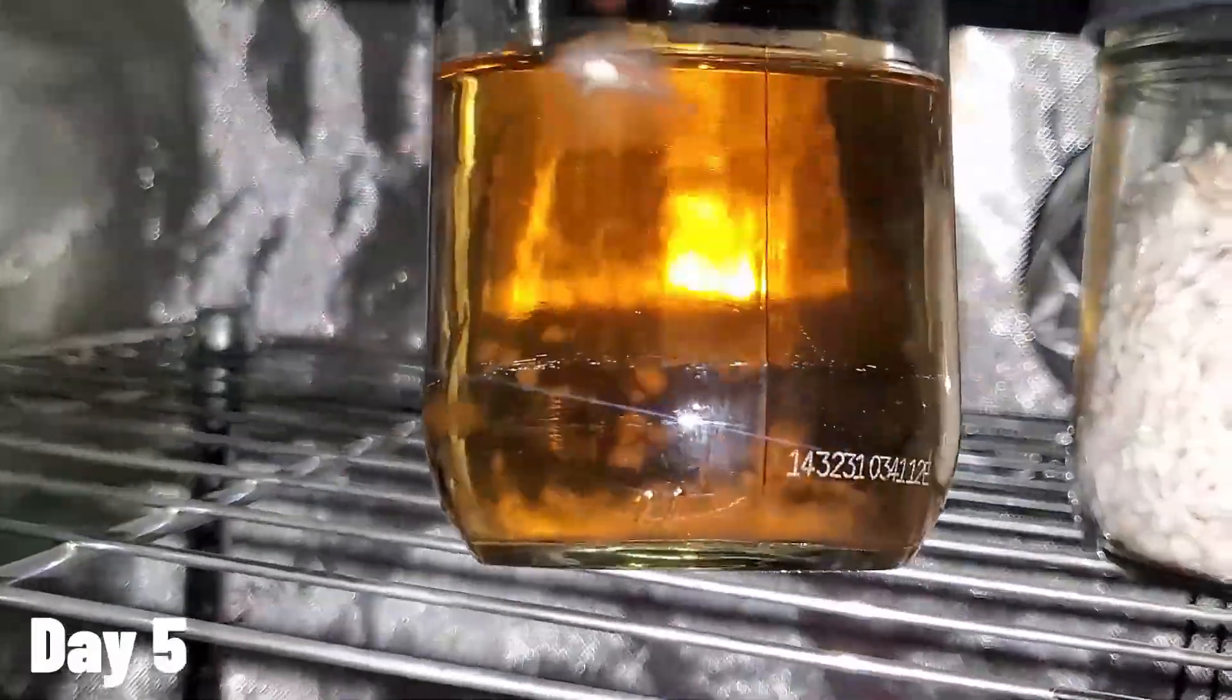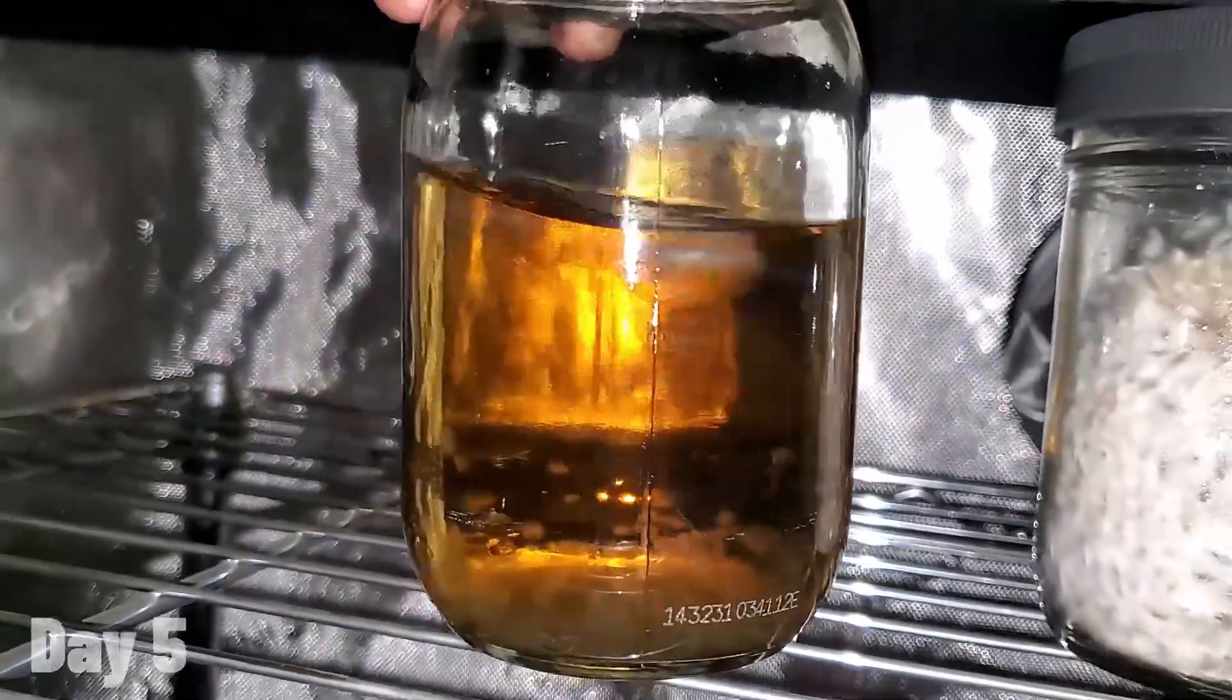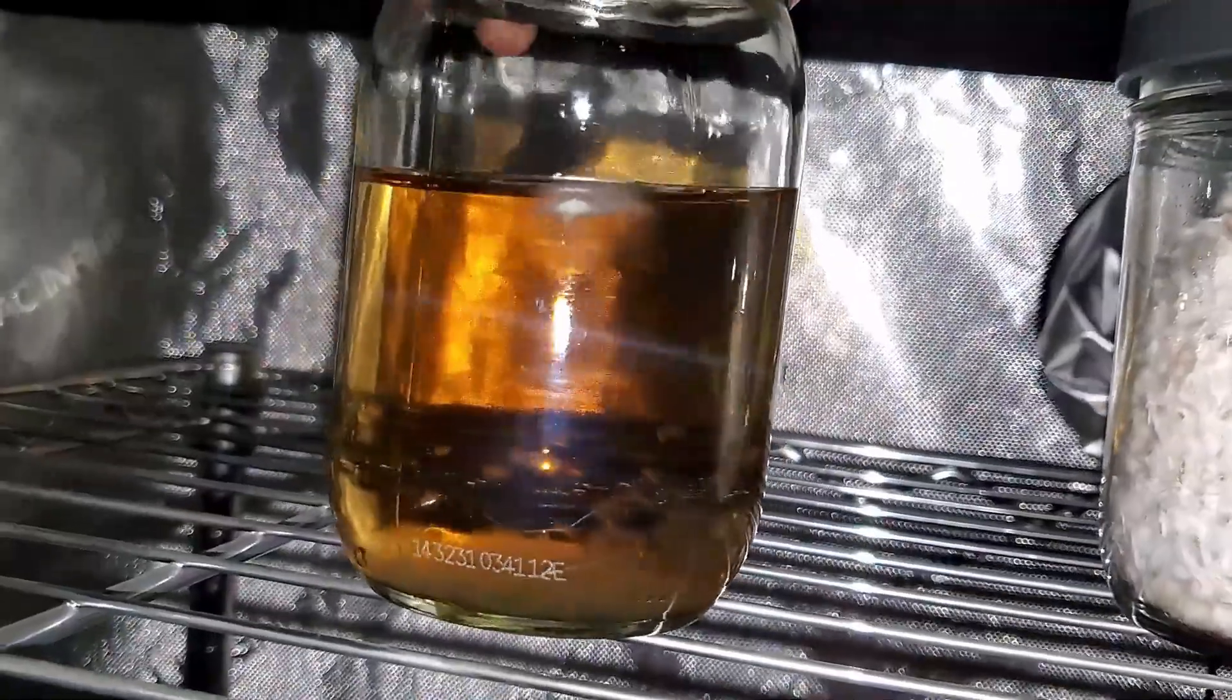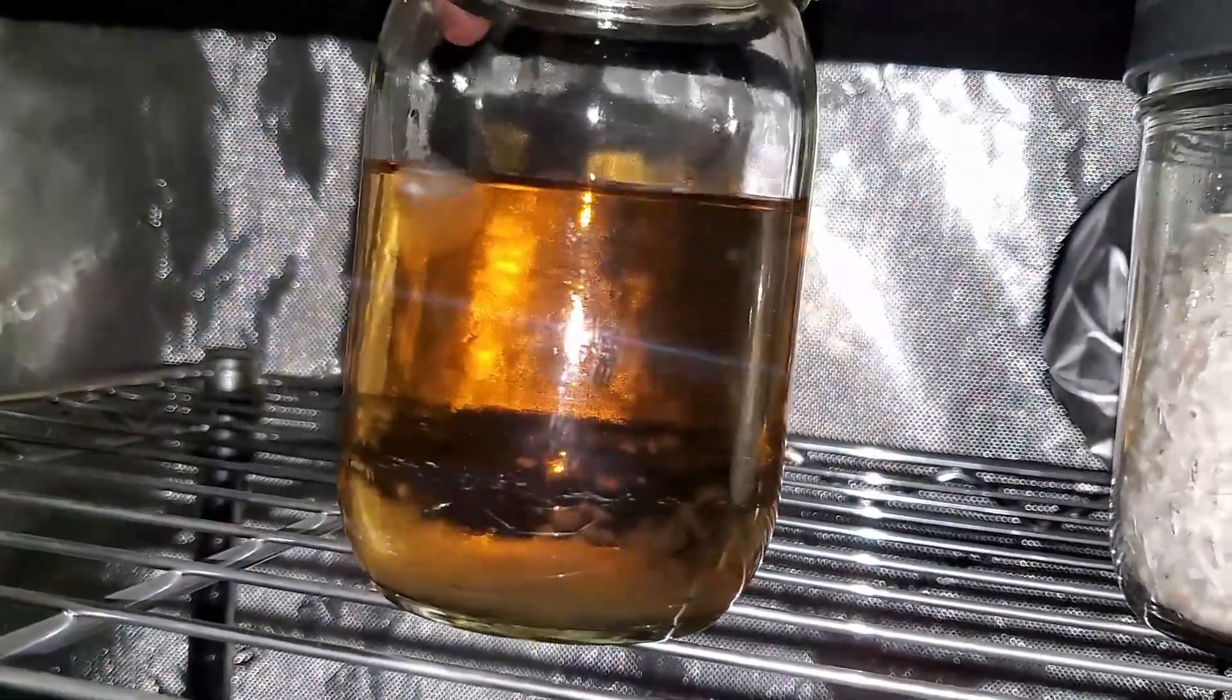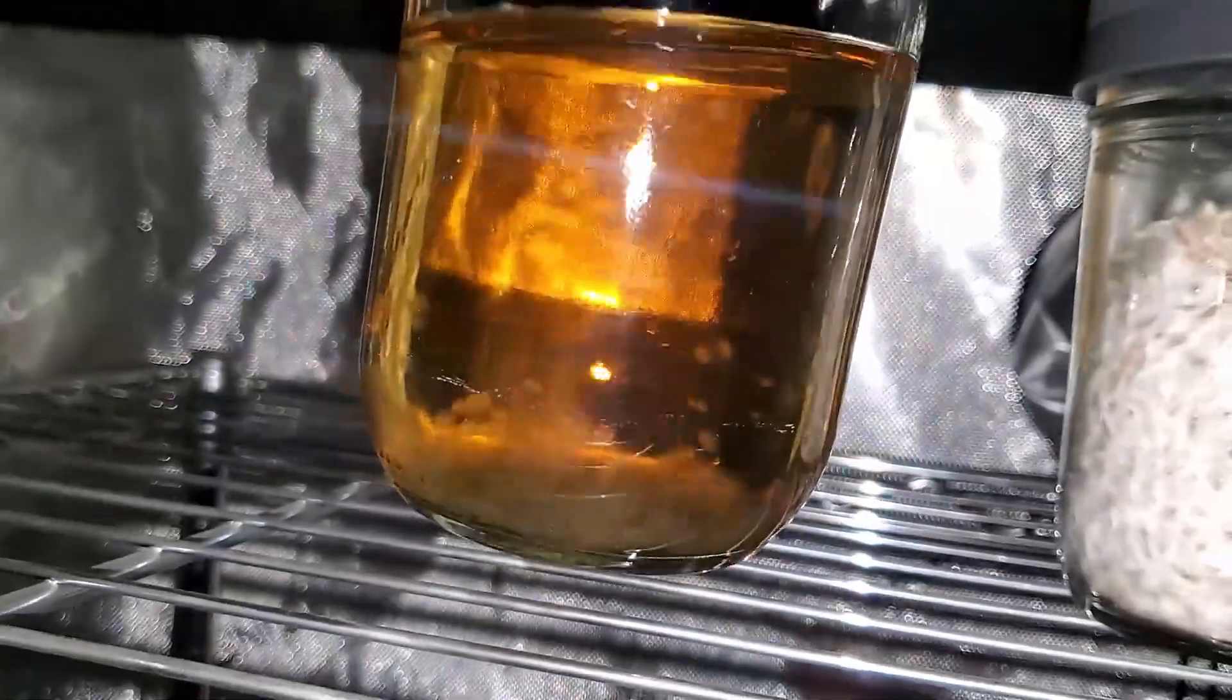So now it's five days later, and if you look inside the jar, you can see that the mycelium has already started forming. You can see it floating inside of there, and then there's a little fuzzy patch on top right there. That's all mycelium that started to form.